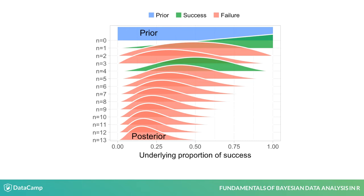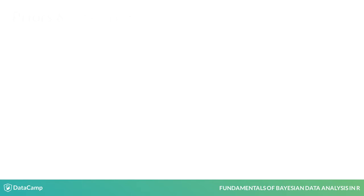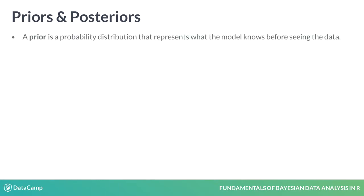Often people drop the probability distribution part and just call these priors and posteriors. So, a prior is a probability distribution that represents what the model knows before seeing the data. A posterior is a probability distribution that represents what the model knows after having seen the data.